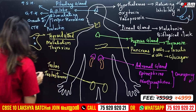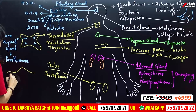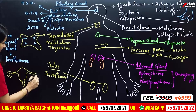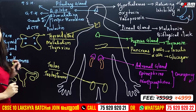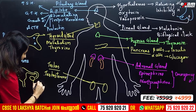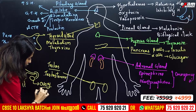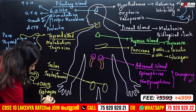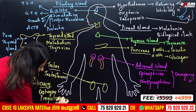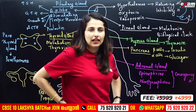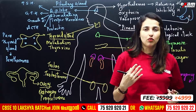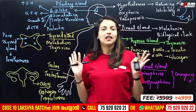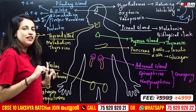In females, the gonads are the ovaries. The ovaries produce two hormones: estrogen and progesterone. These hormones are responsible for female secondary sexual characters, including breast development, hair growth, and menstruation.